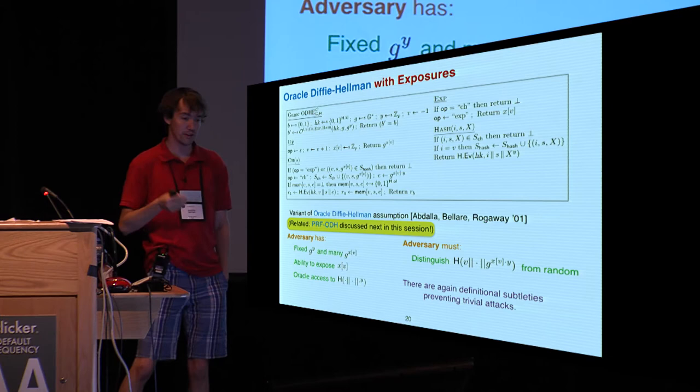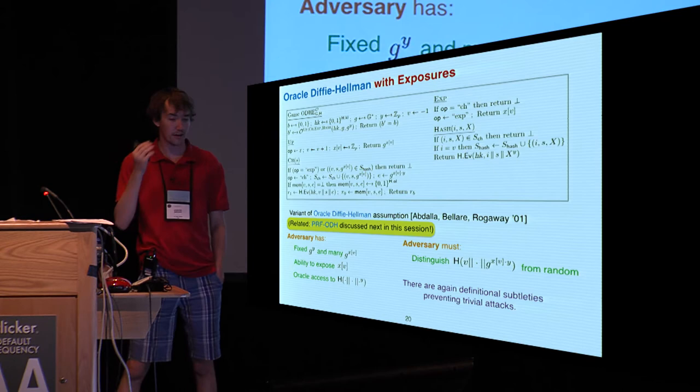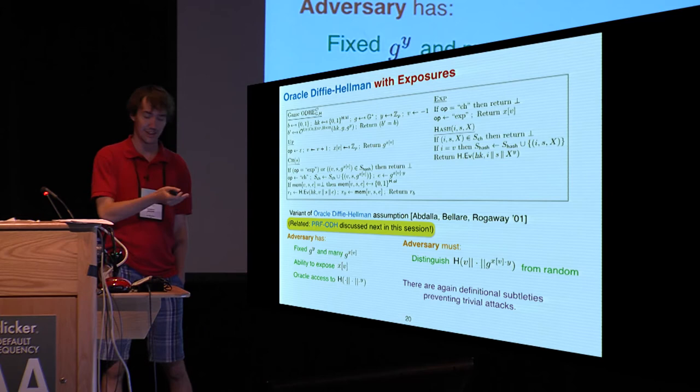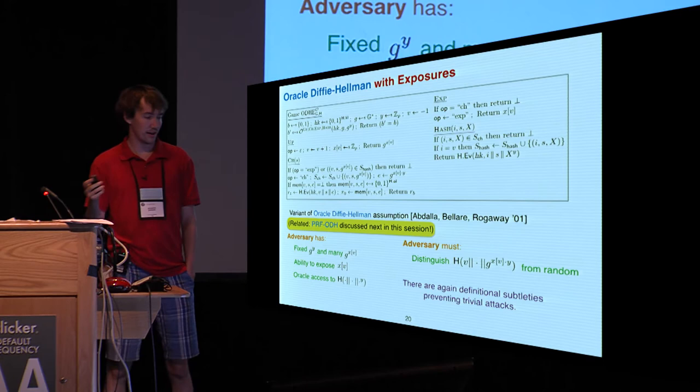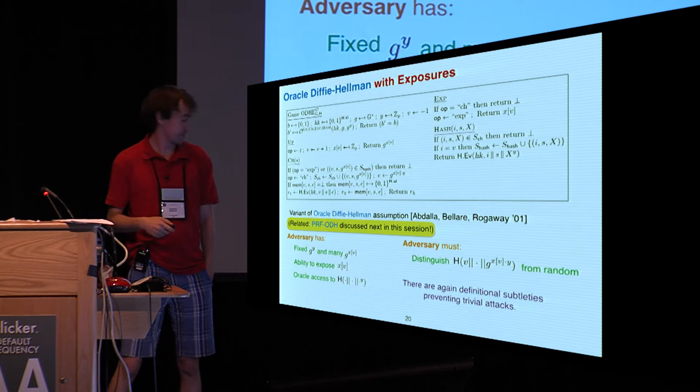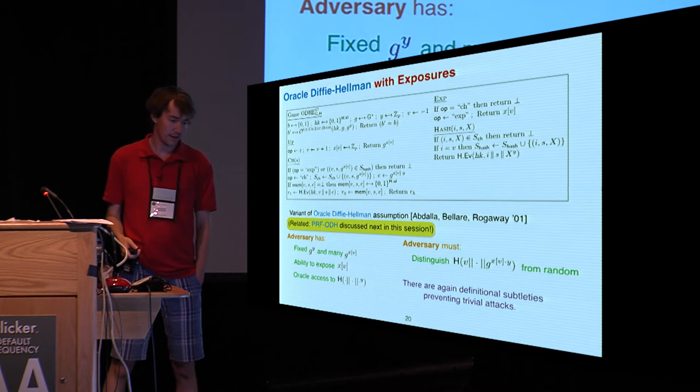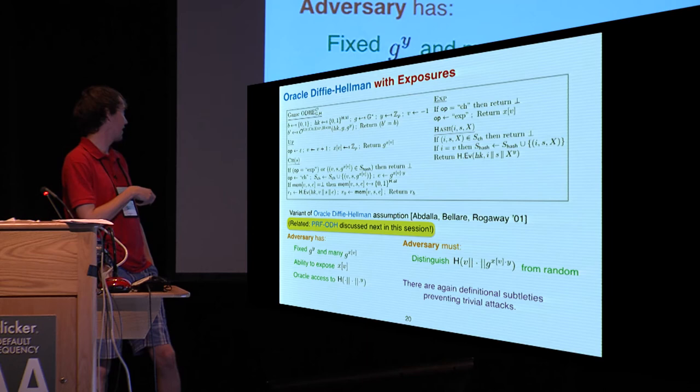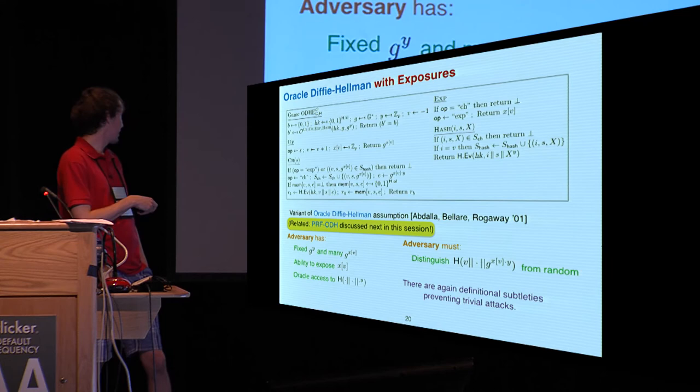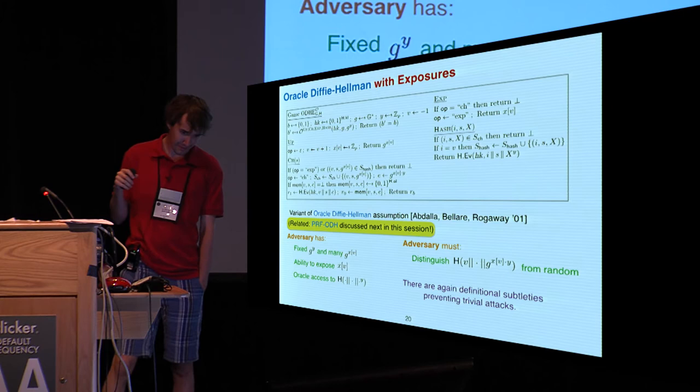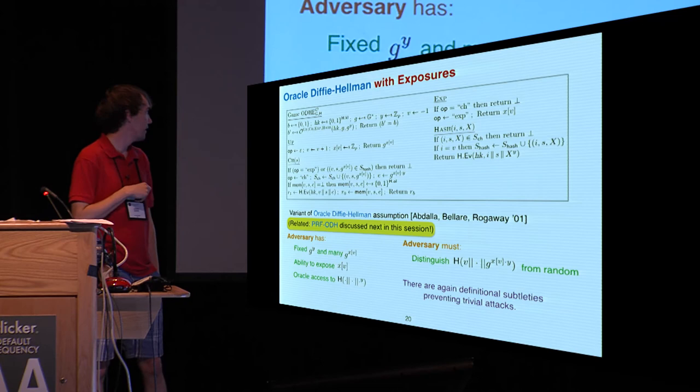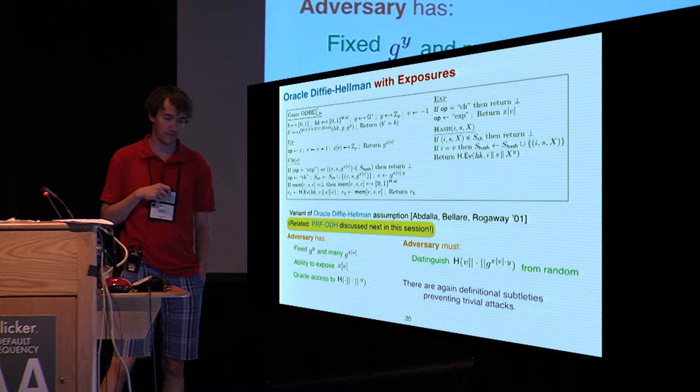Now, let me just finish by saying what this Oracle Diffie-Hellman with exposures thing was. It's a multi-query variant with exposures of the Oracle Diffie-Hellman assumption originally introduced by Abdalla, Bellare, and Rogaway. It's closely related to the PRF-ODH, which we will be hearing about momentarily. In our model here, there's a fixed value g^y, and the adversary can ask for as many values g^x to be created as it wants. The adversary, as many times as it wants, can ask for the underlying x values to be exposed from any of these g^x's. It has oracle access to a hash function with that secret value y kind of embedded into it. And then the goal of the adversary is to distinguish between the output of the hash function and randomness, assuming that it hasn't exposed that x.